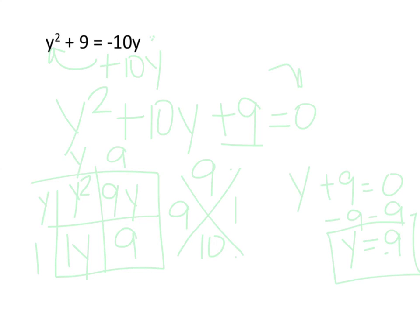That's one of your answers. Now we're going to take this right here, y plus 1, and set that equal to 0. So solve for y by subtracting 1, and y equals negative 1. So one of your answers is y equals negative 1, and the other one is y equals negative 9. Thank you.